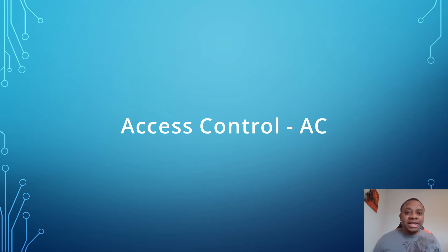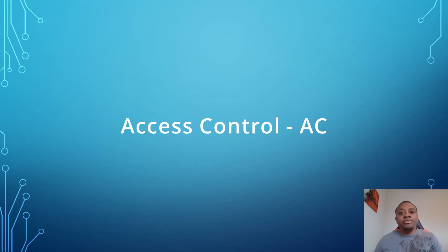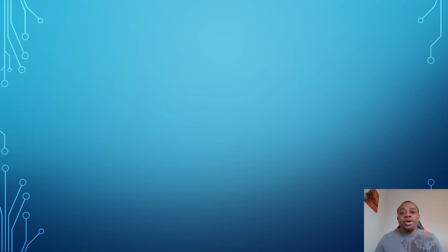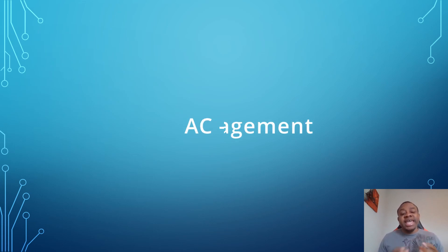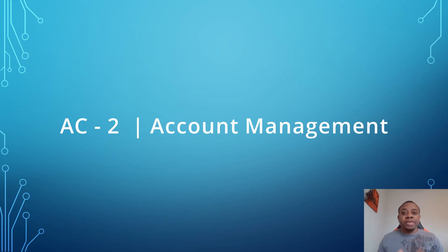The access control family is one of the 18 RMF control families. It focuses on limiting information system access to authorized users and processes acting on behalf of authorized users. It talks about the types of activities and transactions that authorized users are allowed to perform on a system. We'll be looking at AC2, account management, which is one of the access control families.